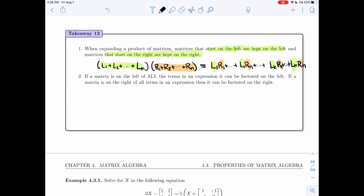Then when you factor, if a matrix is on the left of all the terms in an expression, it can be factored on the left. If a matrix is on the right of all the terms in an expression, then it could be factored on the right. So if I have L times A1 plus L times AK, I'm going to be able to factor L. It's going to be on the left like this. Same thing if I have something on the right. I'm going to be able to factor it on the right again.